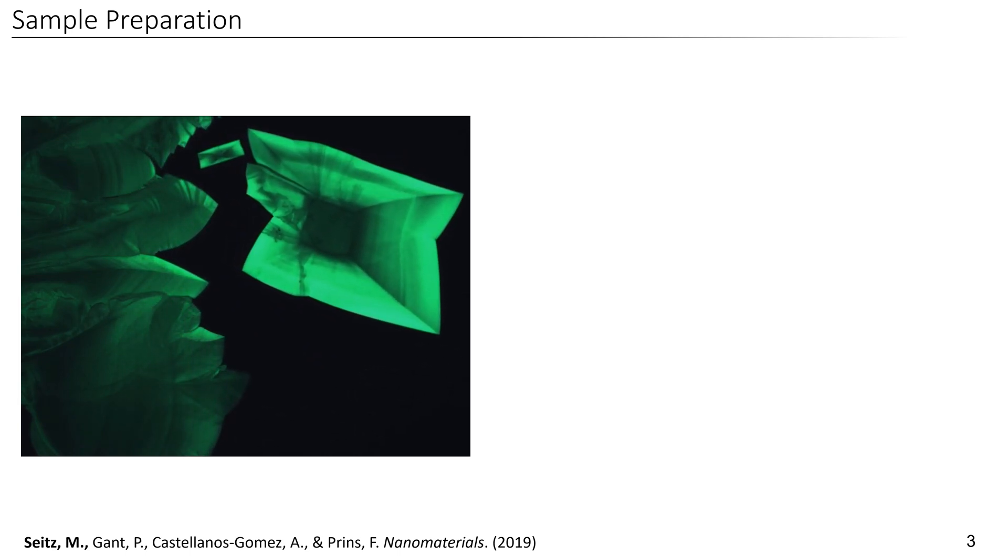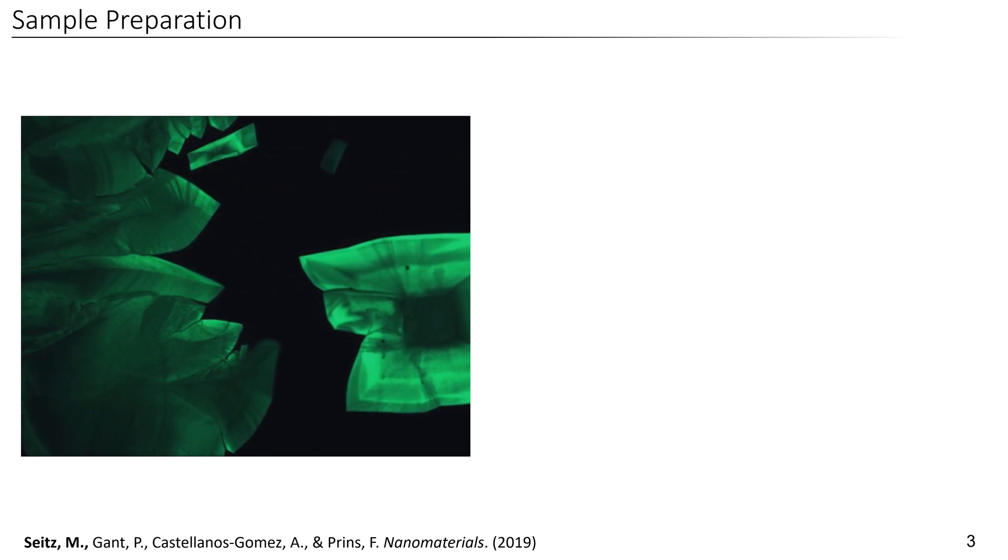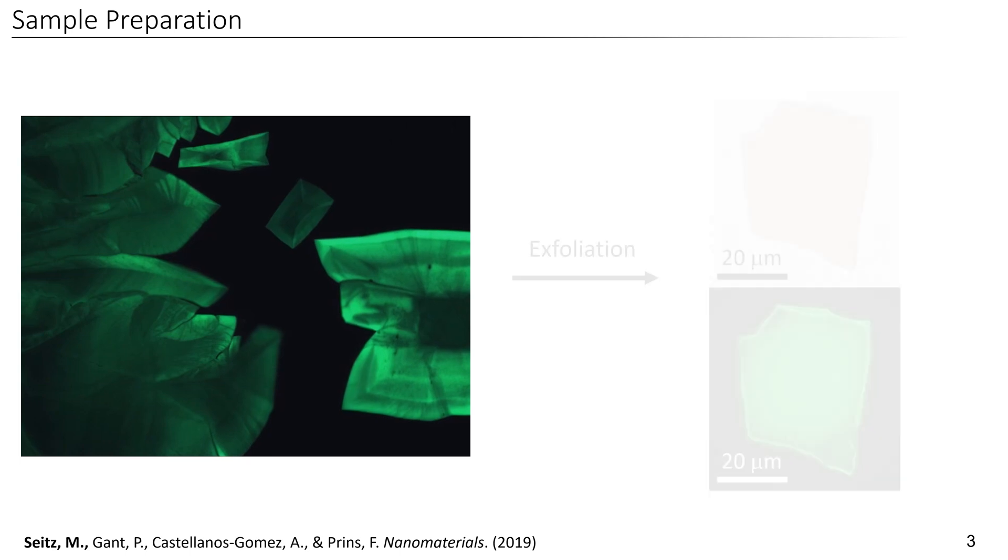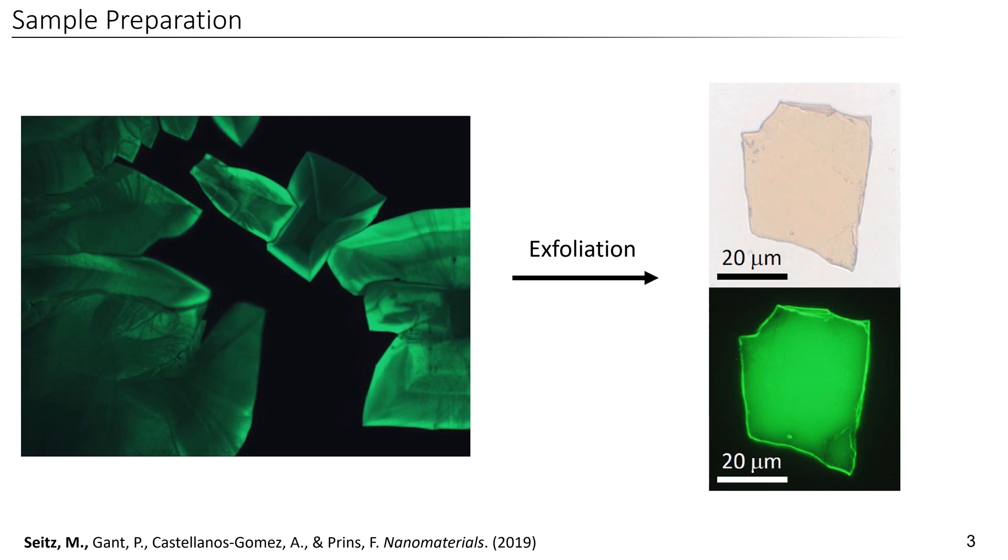We grow our 2D perovskites from a saturated precursor solution, which allows us to get these nicely luminescent single crystals with sizes of up to several hundreds of micrometers and even millimeters. After we grow them, we exfoliate them and obtain single crystalline flakes with a nicely flat surface for inspection.